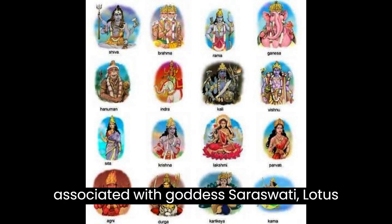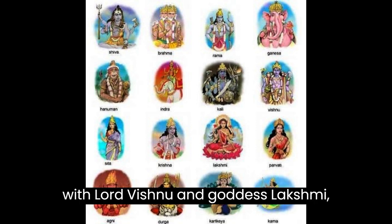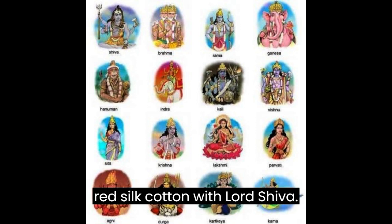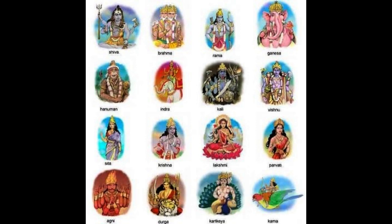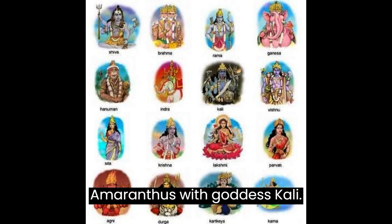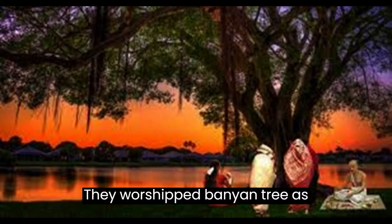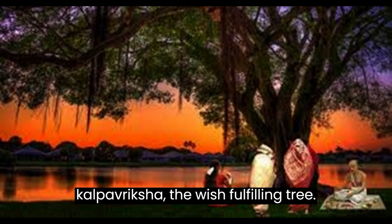Bauhinia was associated with Goddess Saraswati, Lotus with Lord Vishnu and Goddess Lakshmi, Red Silk Cotton with Lord Shiva, and Amaranthus with Goddess Kali. They worshipped the Banyan tree as Kalp Vriksha, the wish-fulfilling tree.